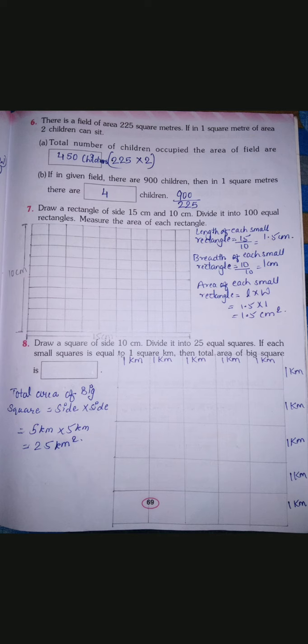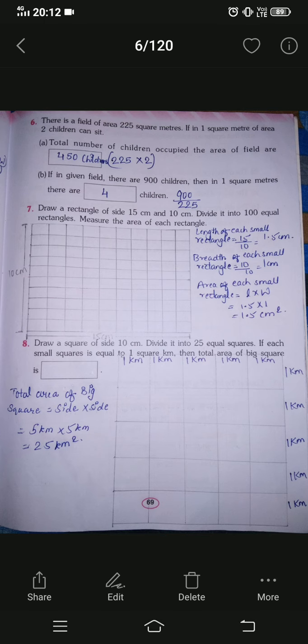Question number 7 is finished. It was very simple — you draw a big rectangle, make 100 small rectangles inside it, find the length and width of each small rectangle to calculate its area. Now let's move to question number 8, which says: draw a square of side 10 centimeter, divide it into 25 equal squares. If each small square equals one square kilometer, find the total area of the big square.